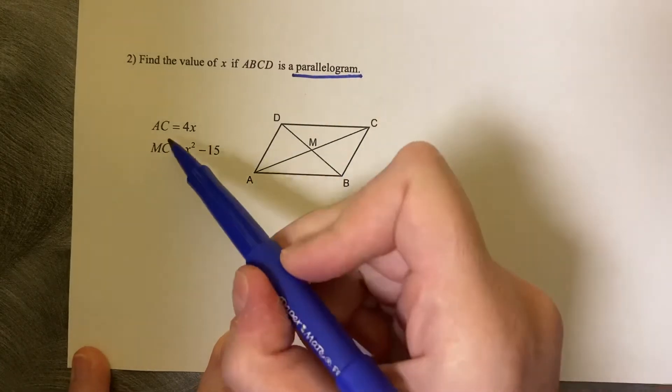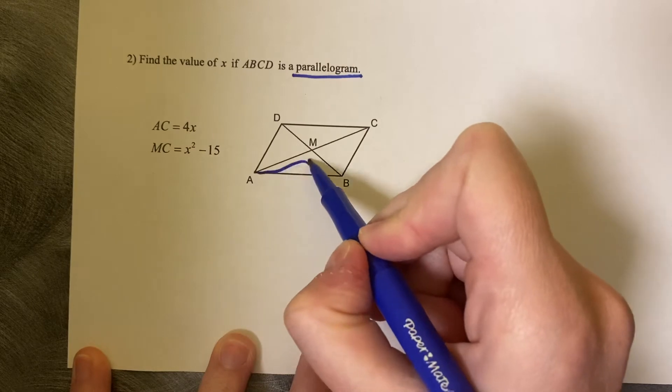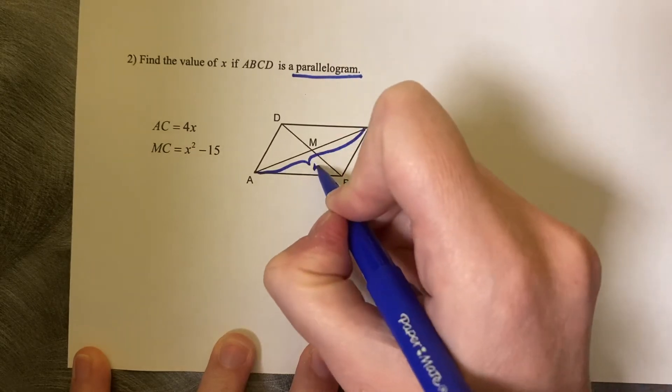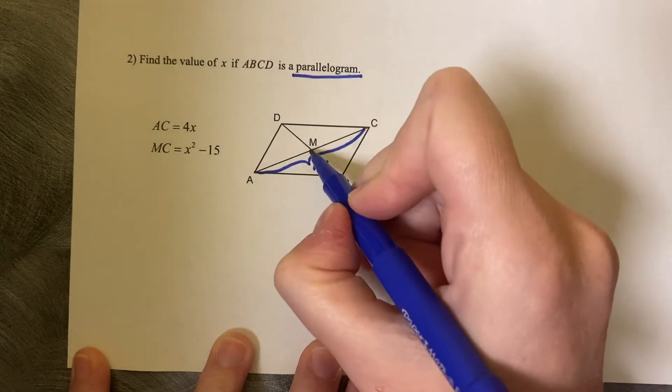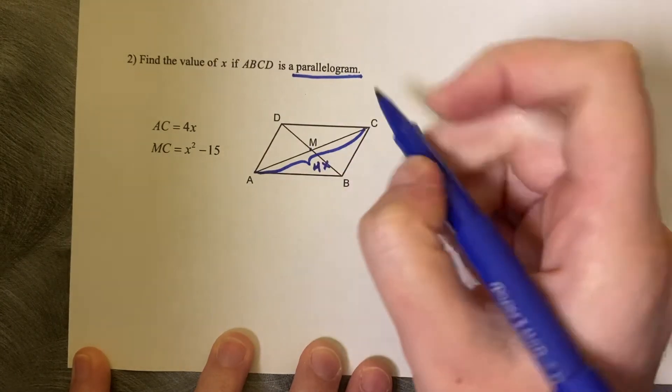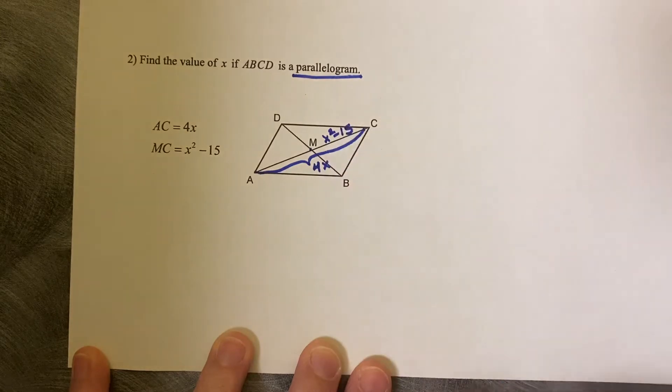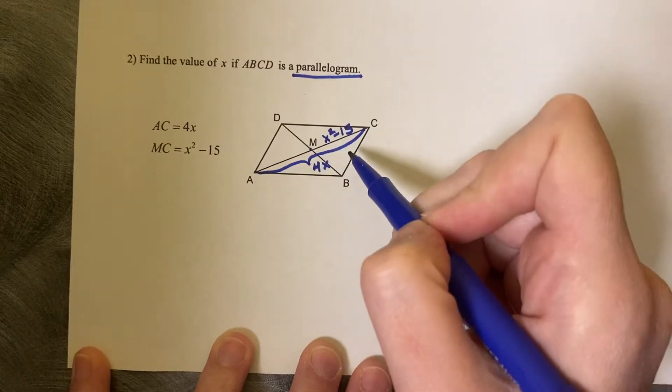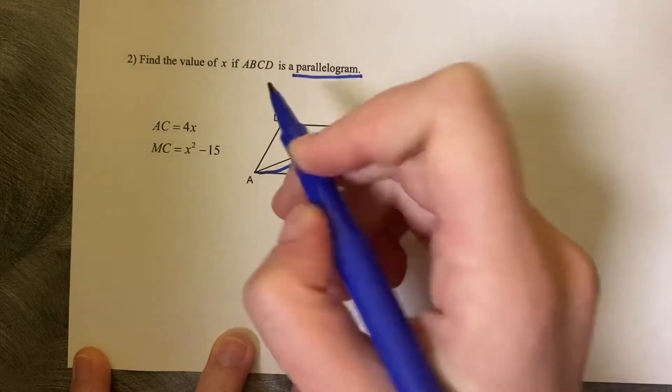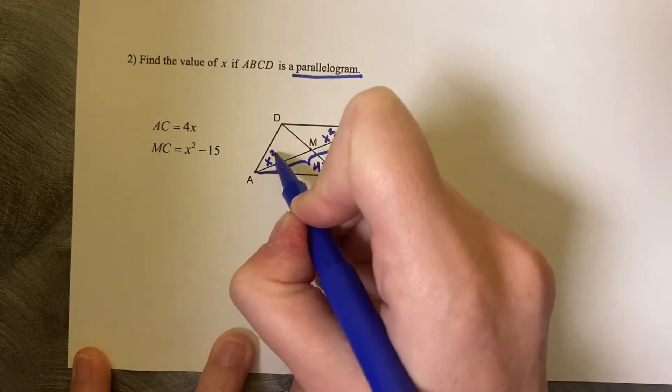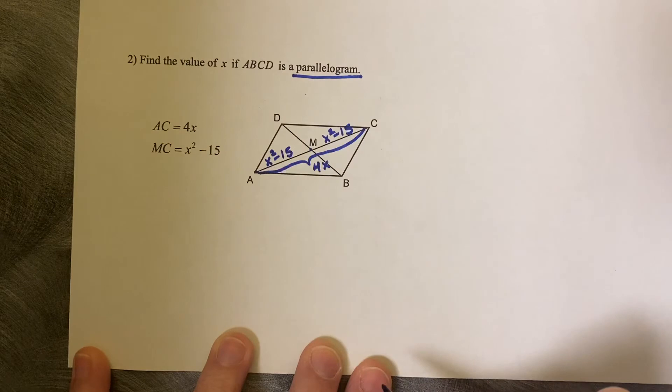So they're saying that AC, this whole diagonal, is 4X. And MC, so just from this middle point to C, is X squared minus 15. Well, if this is a parallelogram, then MC is congruent to MA. So that means that MA is also X squared minus 15.